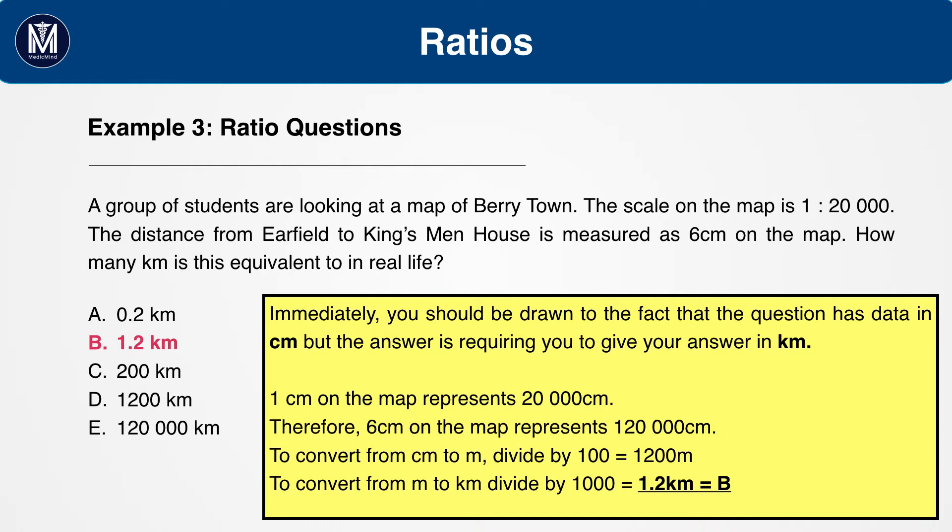Remember, we now need to convert this to kilometres. So divide by 100,000, which gives 1.2 kilometres, which equals b.